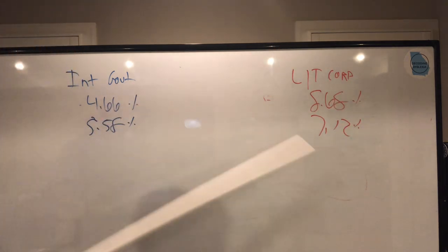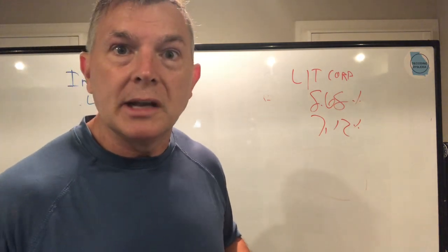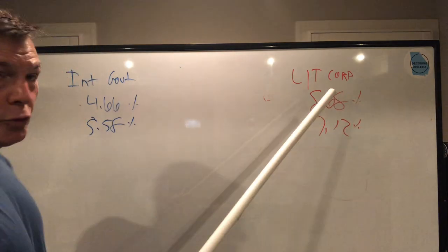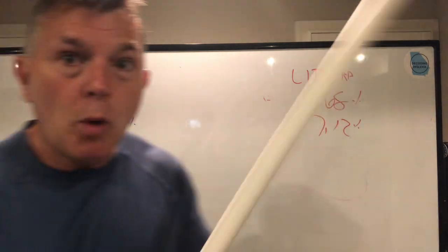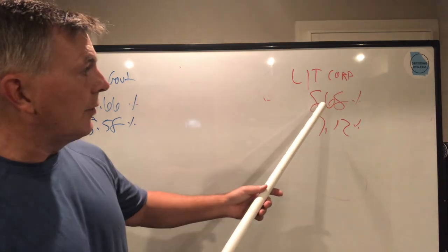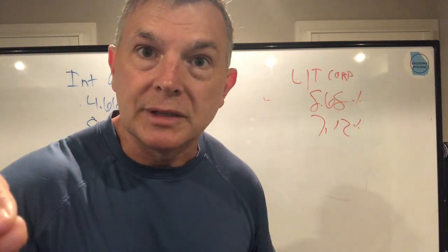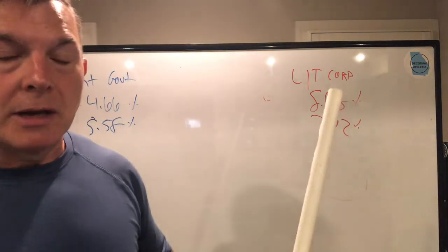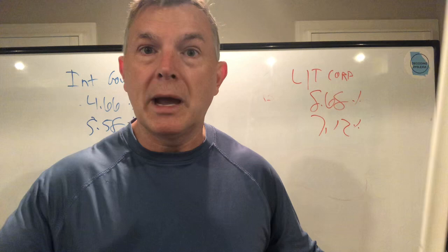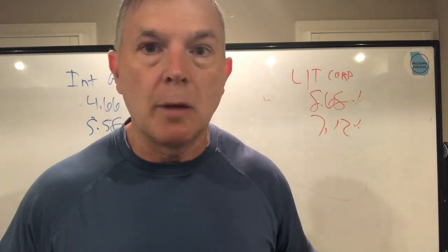Both funds have been in existence simultaneously since 1994, so we're using records from 1994 onward. At the end of 2021, the long-term corporate bond fund had an 8.68% standard deviation. Standard deviation is basically volatility around an average.